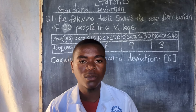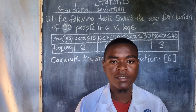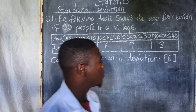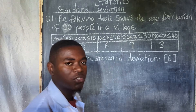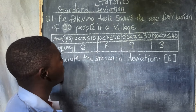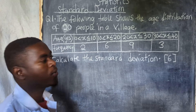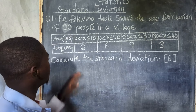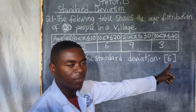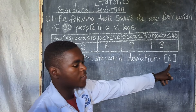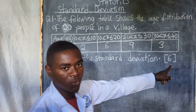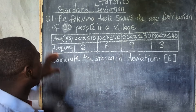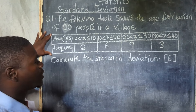Hello, I welcome you all to this wonderful lesson. This is statistics. Specifically, I want to teach you how you can find the standard deviation. In Zambia, this question carries six marks — I've indicated here — and it comes in Paper Two. So I want to teach you how to calculate the standard deviation. This data is a grouped data.